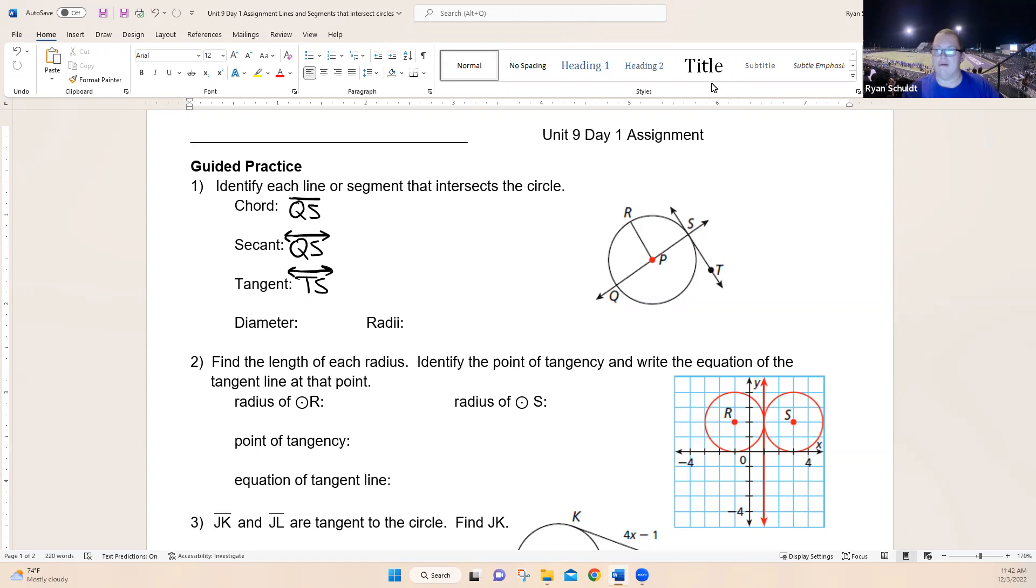For the diameter, the segment that goes all the way across the circle is segment QS. And radii—notice that's plural, so that means there's multiple. For radii, multiple answers for which one's the radius. The first one that we haven't used yet is PR, but then we have PQ and we also have PS. So PR, PQ, PS. Okay, there's number one.